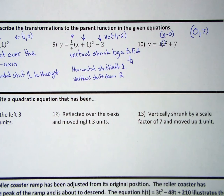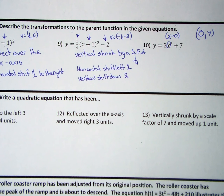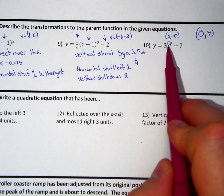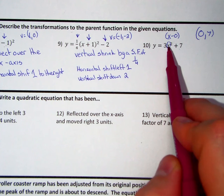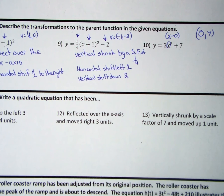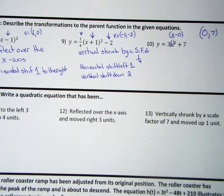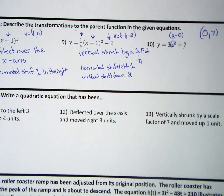Now alternatively, anytime we see our equation in this form, we can go ahead and assume that the x is zero. And when we assume that the x is zero, we plug in a zero and we get a seven for our y value. That will give us our vertex point.